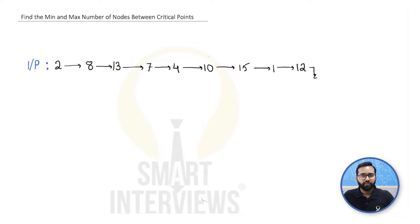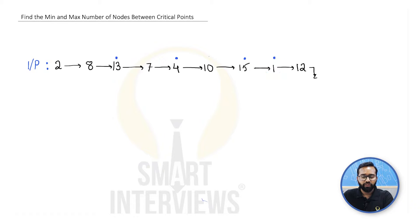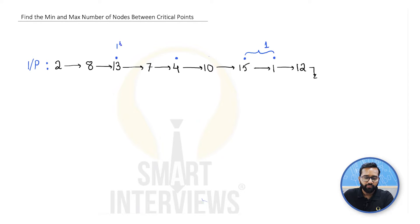In this example, node 13 is a critical point — a local maxima. Node 4 is a critical point — a local minima. Similarly, node 15 and node 1 are also critical points. The minimum distance between these critical points is one, and the maximum distance is obviously between the first critical point and the last critical point.